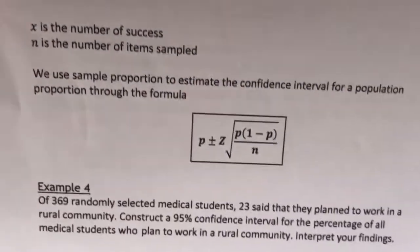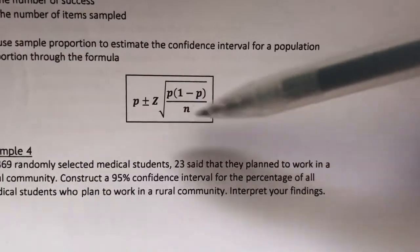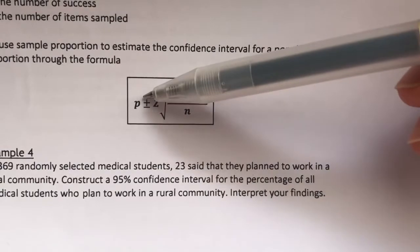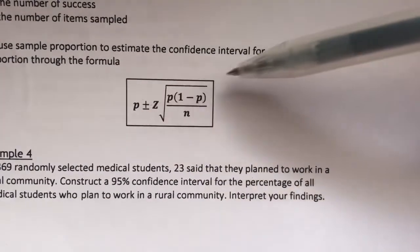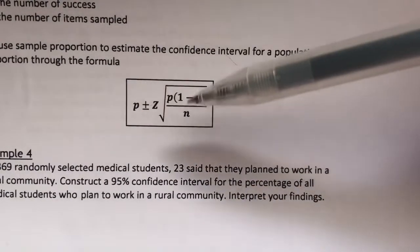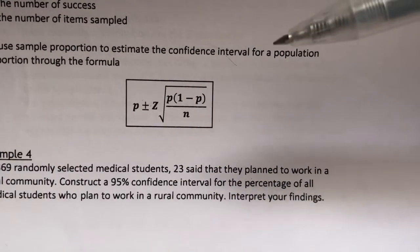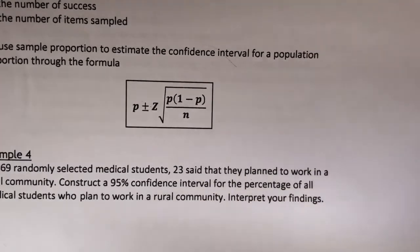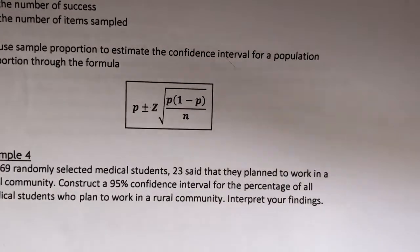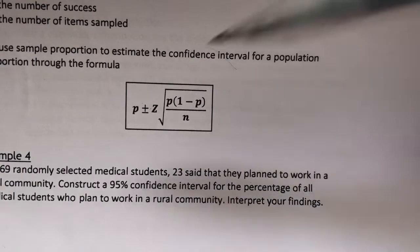We need to adjust the formula a little bit. So it becomes like this: our point estimate is p, the sample proportion, plus minus the margin of error. Now, our margin of error looks different because we're dealing with proportion. Remember, the margin of error consists of two parts: the confidence level and the standard error.